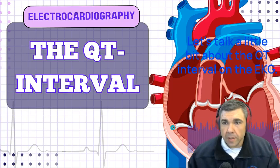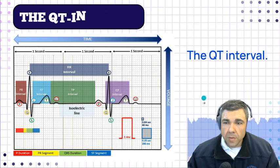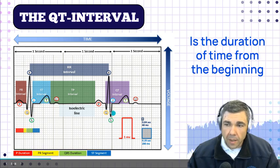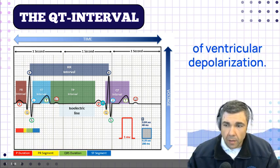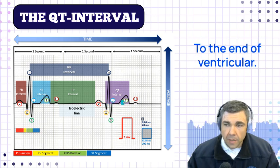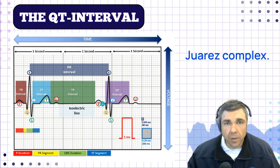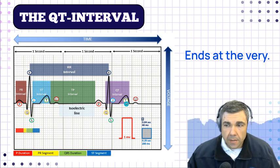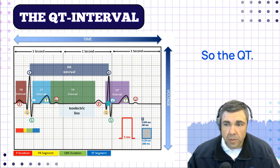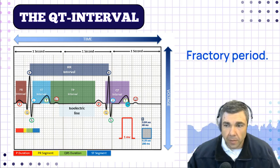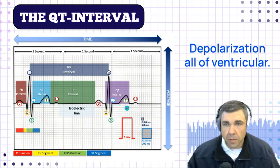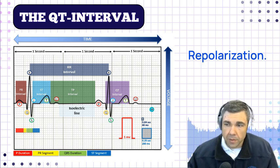Let's talk about the QT interval on the EKG. The QT interval is the duration of time from the beginning of ventricular depolarization to the end of ventricular repolarization. Another way to say that is it starts at the beginning of the QRS complex and ends at the very end of the T wave. The QT interval includes the entire refractory period, all of ventricular depolarization, all of ventricular repolarization.